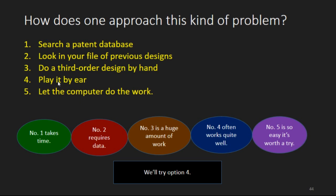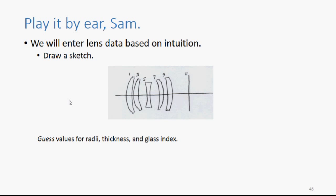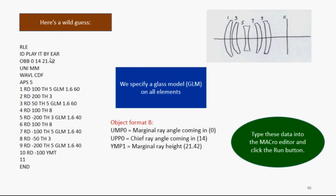But just to illustrate, I'm going to do it both ways. I'm going to use number four, first of all. Try option four. Play it by ear, Sam. We're going to add our lens based on intuition. On a napkin, I'm going to just sketch some lenses. I'm going to guess values for the radius, thickness, and index. And here's my wild guess. Radius 100, radius 200, and so on.